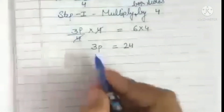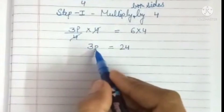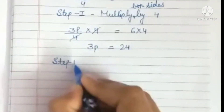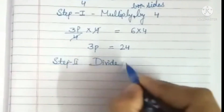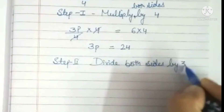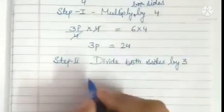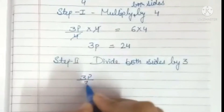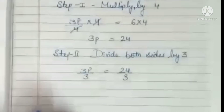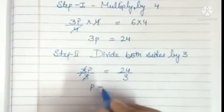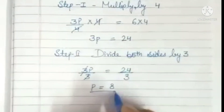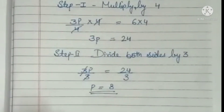Now for removing this 3, we need to divide, because p is multiplied with 3. So the next step is divide both sides by 3. So 3p upon 3 equals 24 upon 3. You do the same on both sides. So p is equal to 8.